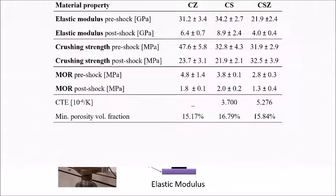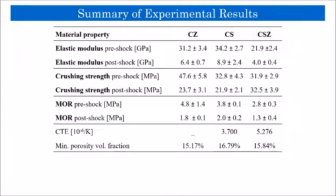Here is a summary of our experimental measurements for the three groups of composites, which shows the average value for elastic modulus, crushing strength, and modulus of rupture, both before and after thermal shock. Additionally, by submerging some samples in water, we approximated the minimum percentage of the porosity.